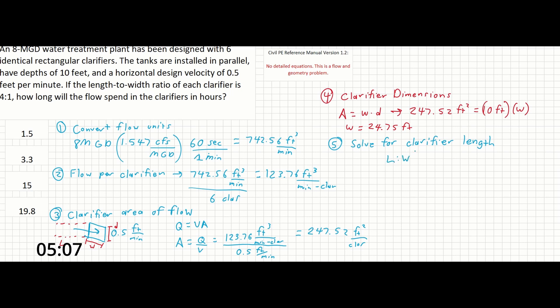So we can say L to W equals 4 to 1 equals some value to 24.75 feet. Multiplying that by 4, we would get an L of just about 99 feet.